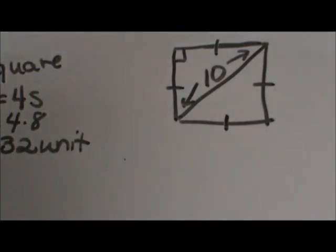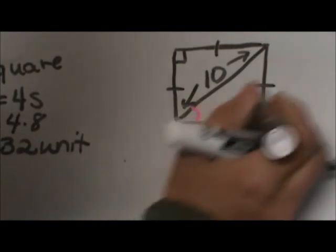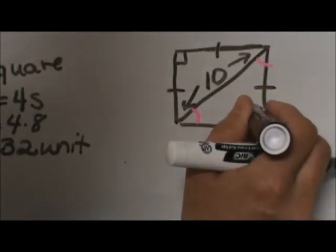Well, inside a square you have got a 45-45-90 right triangle. So these two angles are 45 and this one is 90.